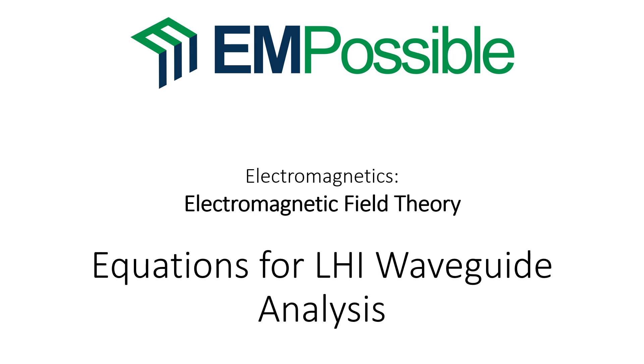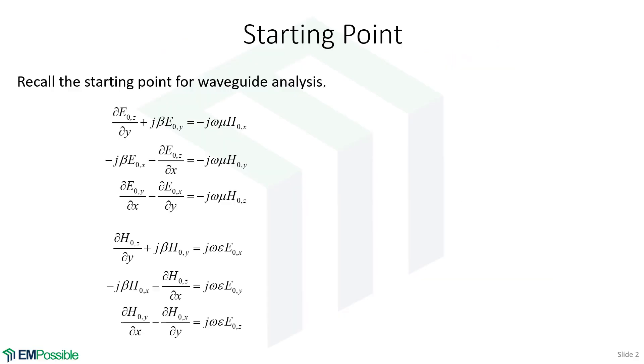Equations for Linear Homogeneous Isotropic Waveguide Analysis. From the last video, this is the starting point that we derived. Now, there are a lot of field components. It is six coupled partial differential equations. This is a rather complicated situation. But there's a really clever way to simplify this down and minimize the number of terms that have to be solved.